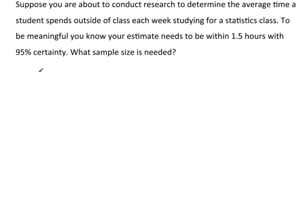So, looking at this information, I know that the margin of error has to be no more than 1.5 with 95% certainty, so alpha is .05. And what I need is an estimate for sigma. Well, this is the average time students spend outside of class each week studying for this particular class.